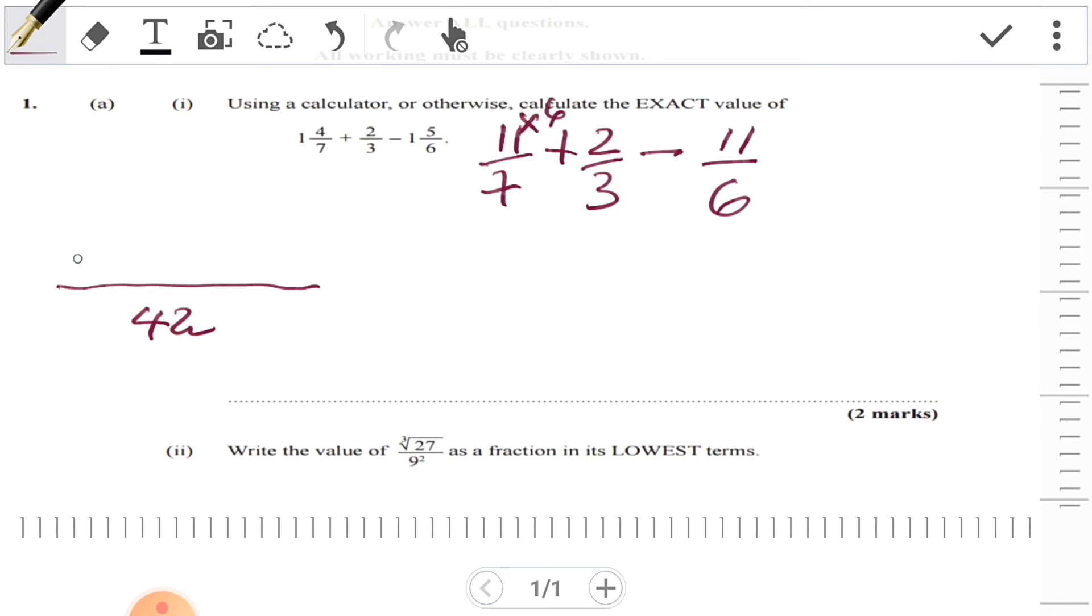3 into 42 is 14, 14×2 is 28. And 6 into 42 is 7, 7×11 is negative, so that's minus 77.